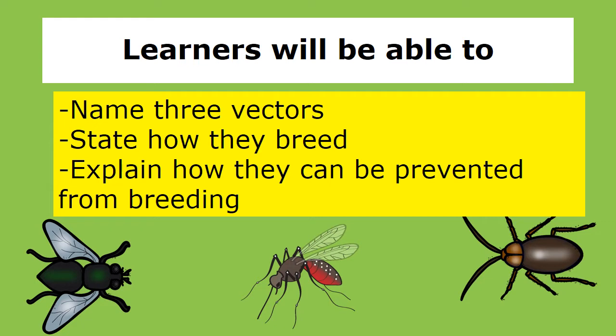In this lesson, you will be able to name three vectors, state how they breed, and explain how they can be prevented from breeding.